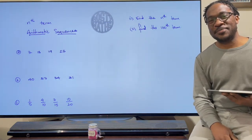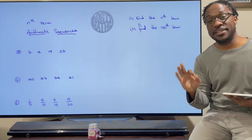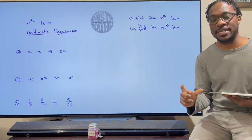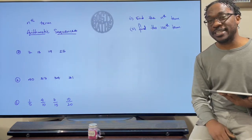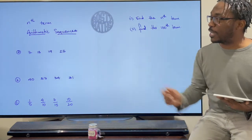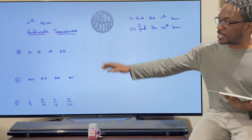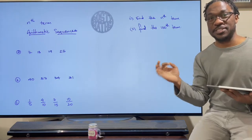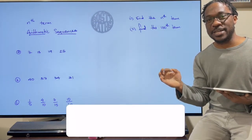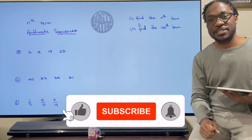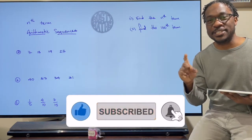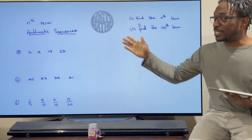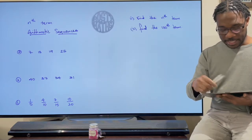Welcome back to another Rocky Maths video and welcome back to my Year 9 series on algebra. We've taken a break from this series for a while, and now it's time to come back and do some work in the algebra section. We are in arithmetic sequences today — we're going to find the nth term and then find the hundredth term in a sequence. If you are new here, don't forget to hit the subscribe button and the notification bell so you don't miss another upload.